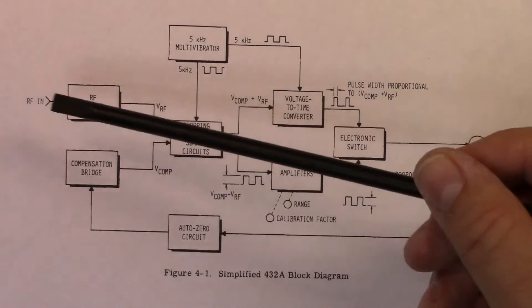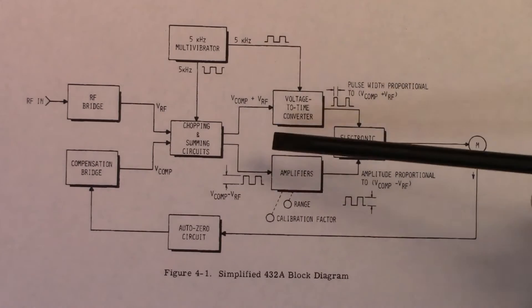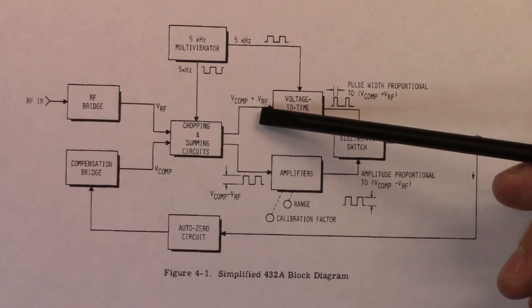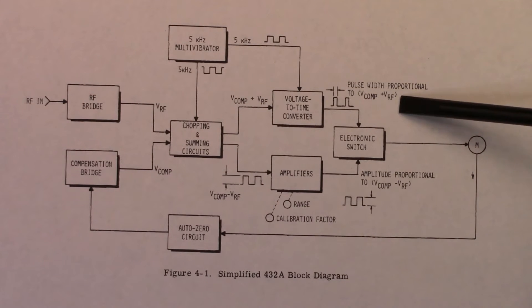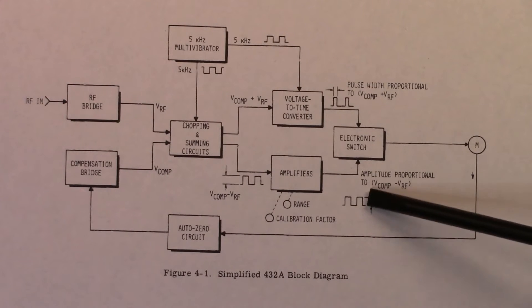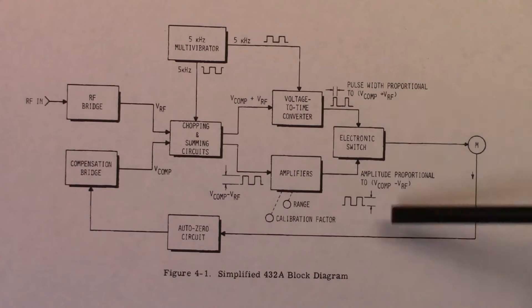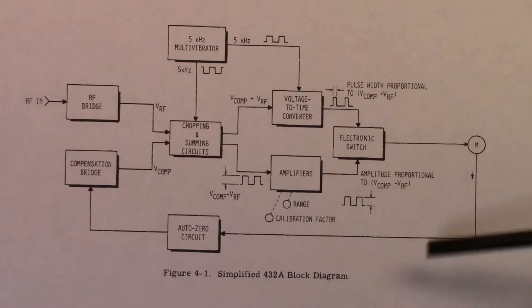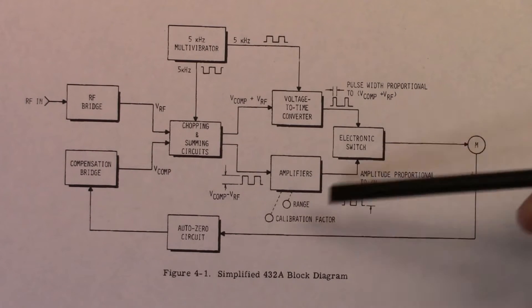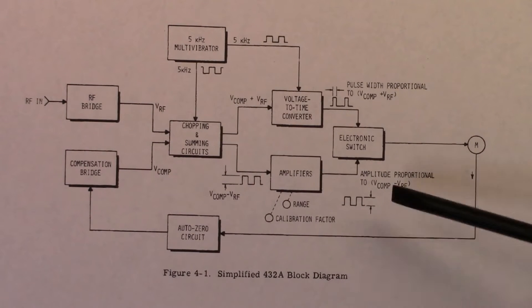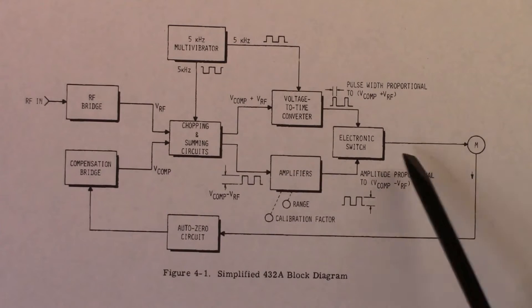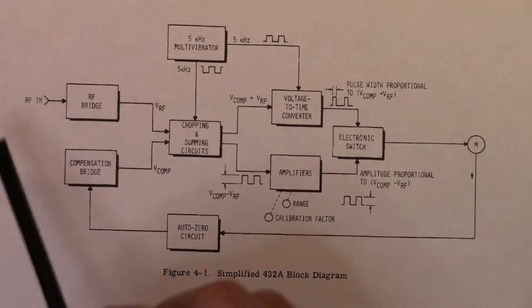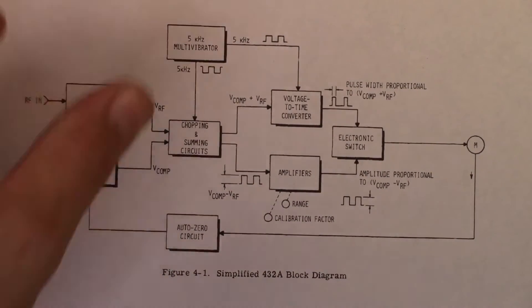Basically what ends up happening is a 5 kilohertz multivibrator creates a Vcomp plus RF and a Vcomp minus RF on this side of the circuit. The pulse width is proportional to the two values. On this side, the amplitude is proportional to Vcomp minus Vrf, and that's how we get rid of the Vcomp aspect. Inside this switch, they're melded back together so the meter sees a set of pulses that have their width and amplitude directly based on the RF signal. We utilize an auto-zero circuit to keep that compensation bridge zeroed.